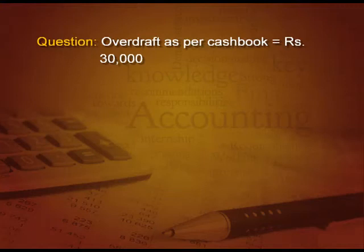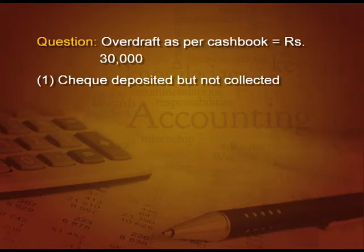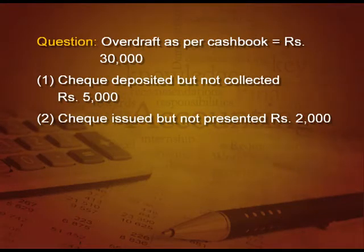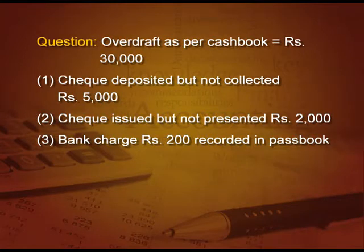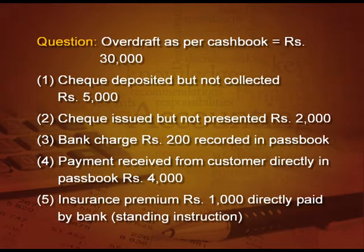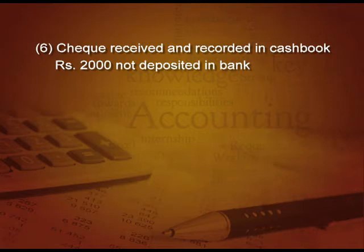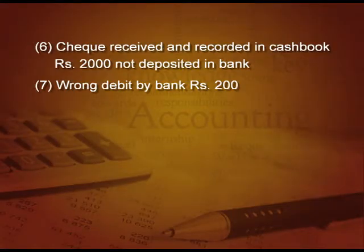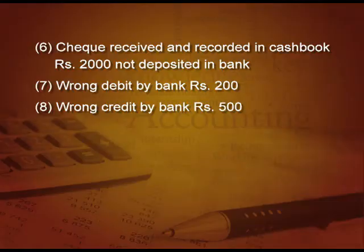The question: overdraft as per cash book is 30,000. Entry 1: check deposited but not collected, 5,000. Entry 2: check issued but not presented, 2,000. Entry 3: bank charges 200, recorded in passbook only. Entry 4: payment received from customer directly in the passbook, 4,000. Entry 5: insurance premium 1,000 directly paid by bank on standing instruction of the customer. Entry 6: check received and recorded in the cash book, 2,000 but not deposited in the bank. Entry 7: wrong debit by the bank, 200. Entry 8: wrong credit by the bank, 500.